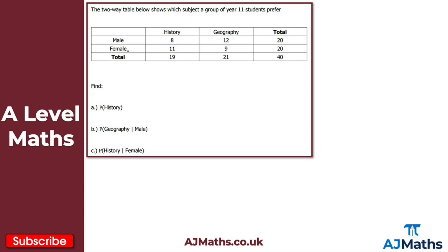For this question we're asked to find three probabilities. For part A, we're looking for the probability that a randomly selected student studies history. In total, 19 students study history, and we divide by the total number of students, which is 40. So we get 19 out of 40. Hopefully that seems straightforward — notice there was no conditional probability involved in part A.